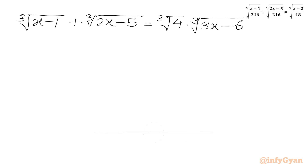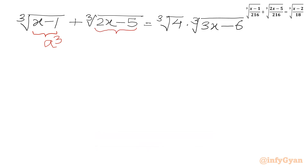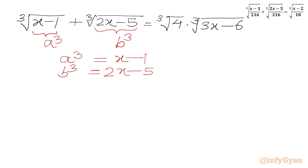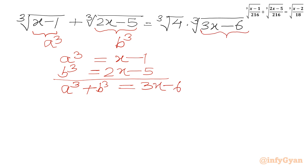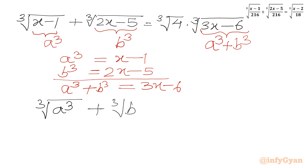Let us write our equation first and set up substitutions. We will assume our first radicand a cubed, and consider our second radicand b cubed. So let a cubed equal x minus 1, and b cubed equal 2x minus 5. Once we add these two equations, we get a cubed plus b cubed equal to 3x minus 6, which appears in our equation. So I can write cube root of (a cubed plus b cubed) and rewrite the equation as cube root of a cubed plus cube root of b cubed equal to cube root of 4 times cube root of (a cubed plus b cubed).